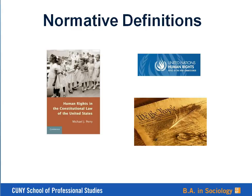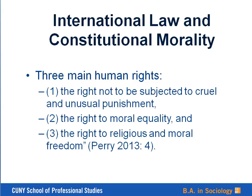A study guide for Perry is also provided. According to Perry, a key factor in determining whether or not a nation upholds international laws on human rights is whether or not the constitution of that nation upholds or challenges them. He provides a penetrating analysis of especially three main human rights and international human rights which are entrenched in the constitutional law of the United States and are therefore part of the constitutional morality of the United States: one, the right not to be subjected to cruel and inhuman punishment; two, the right to moral equality; and three, the right to religious and moral freedom.